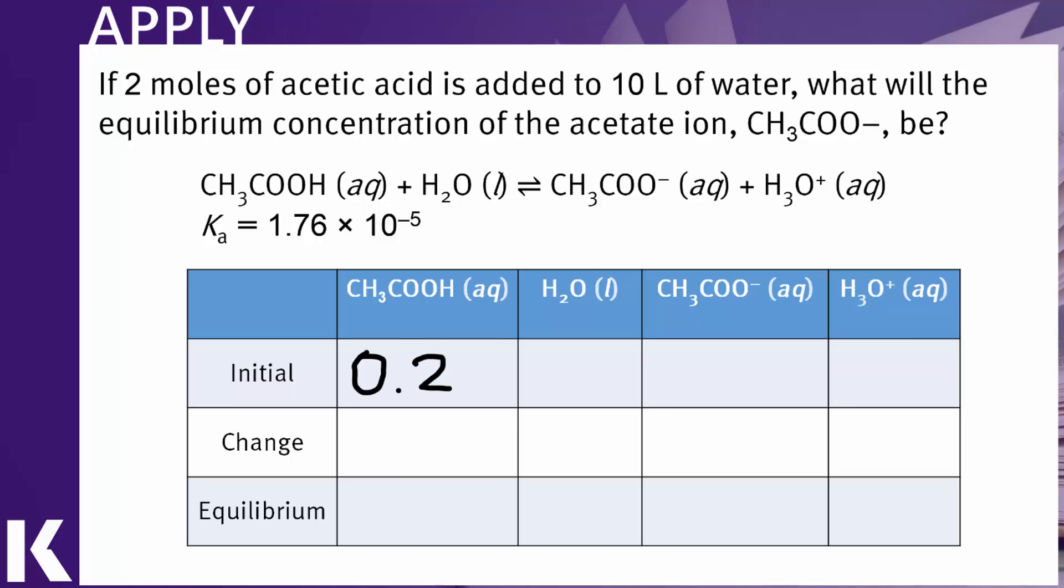Our initial concentration is 0.2 molar of acetic acid. We have a concentration of zero for the acetate and the hydronium ion to start. However much acetic acid dissociates, we'll call that X, therefore the change is minus X, and whatever dissociates shows up as acetate and hydronium. So we'll call those both X for the change.